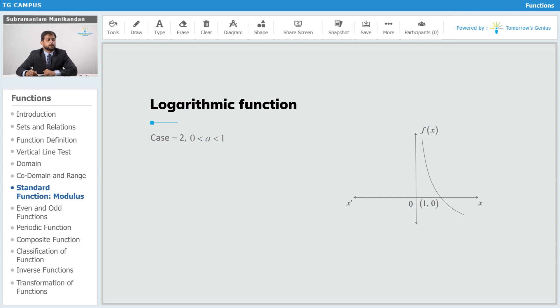Similarly, when a is between 0 and 1 and you have values of x as fractions, then the logarithm is positive. And when the values of x are greater than 1, since the base is a fraction, the value of the logarithm of that number is a negative number.